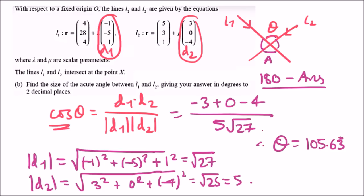Therefore cos θ equals negative 7 over (5 root 27). Taking cos inverse gives 105.63 degrees, which is obtuse. The acute angle is 180 minus 105.63 equals 74.37 degrees.